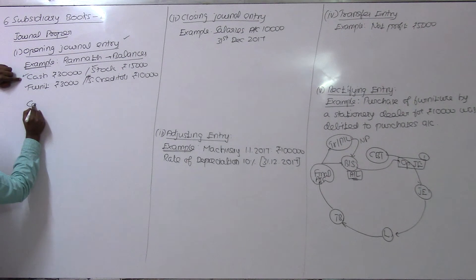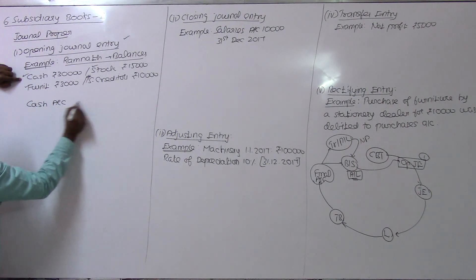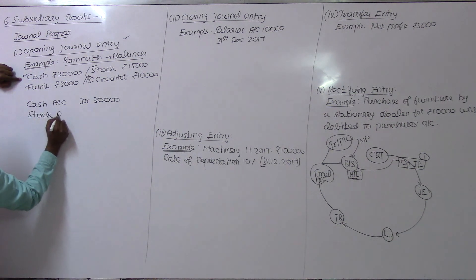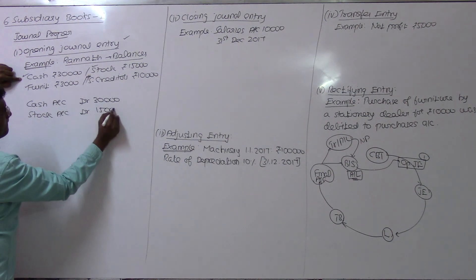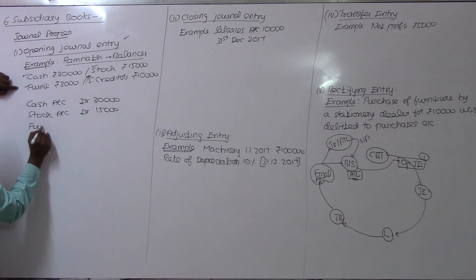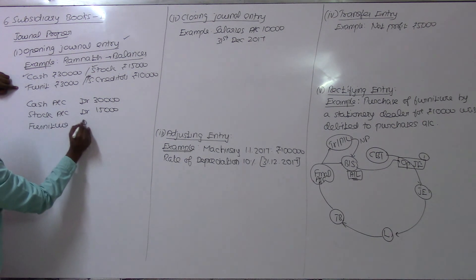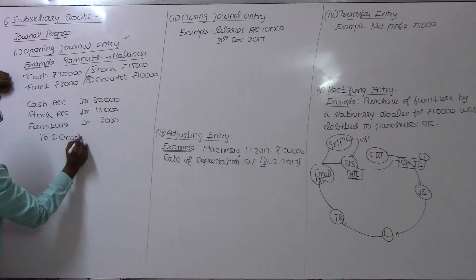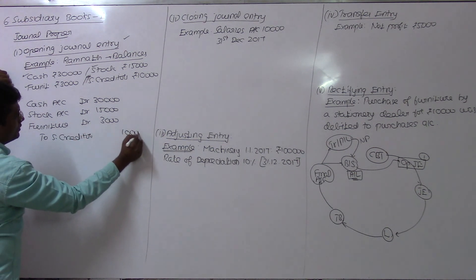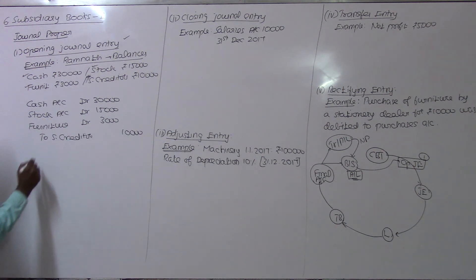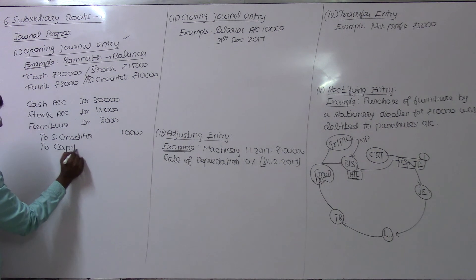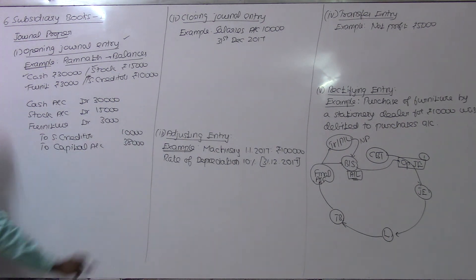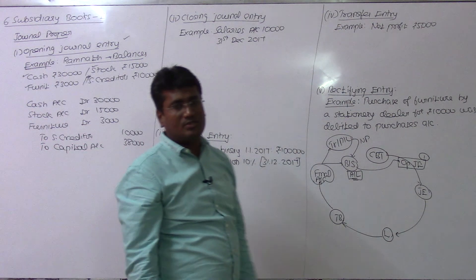The entry is: Cash Account debit 30,000 rupees; Stock Account debit 15,000 rupees; Furniture Account debit 3,000 rupees. Sundry creditors, being liabilities, are credited at 10,000 rupees. The difference of 38,000 goes to Capital Account as credit. This is the opening journal entry. It will not be in the form of any subsidiary books.